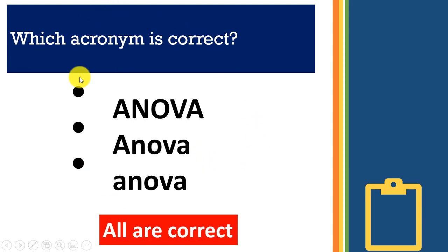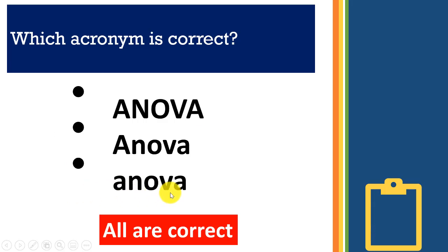Which acronym is correct — Analysis of Variance, ANOVA in all caps, or ANOVA with only the first letter capitalized, or everything in lowercase? By the way, all are correct. You can use them as the spirit moves you. Usually when it appears within a sentence in a thesis, project report, or article, the mixed-case form is fine, but when starting a sentence, all caps is also acceptable.